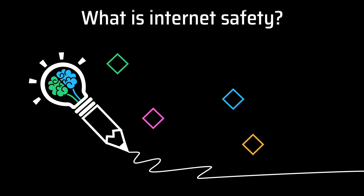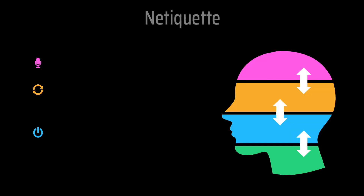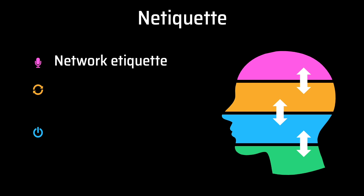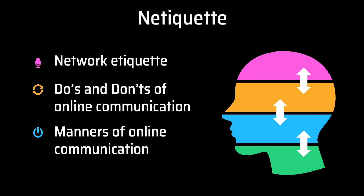First, we'll consider the question: what is internet safety? Internet safety refers to the online security or safety of people and their information when using the internet. We get this idea about NITICAT. NITICAT is derived from the word 'network etiquette.' It basically means the dos and don'ts of online communication, or the manners of online communication.